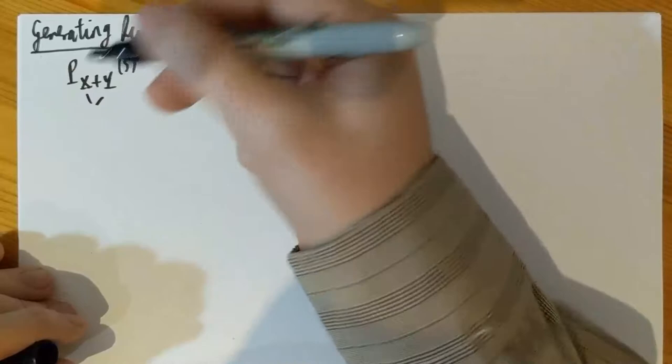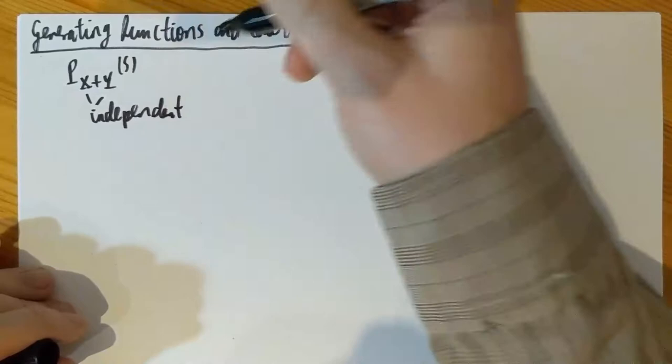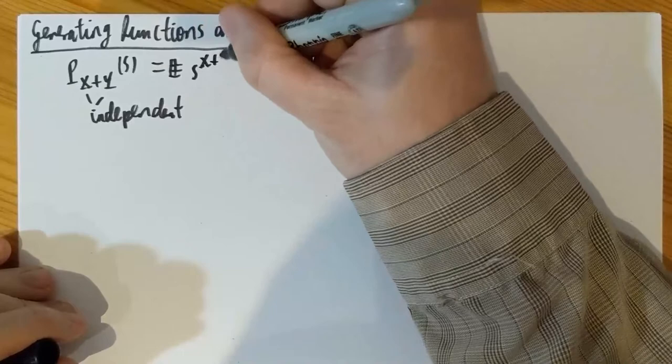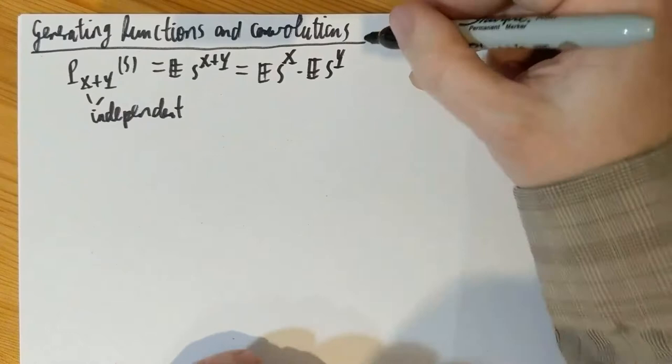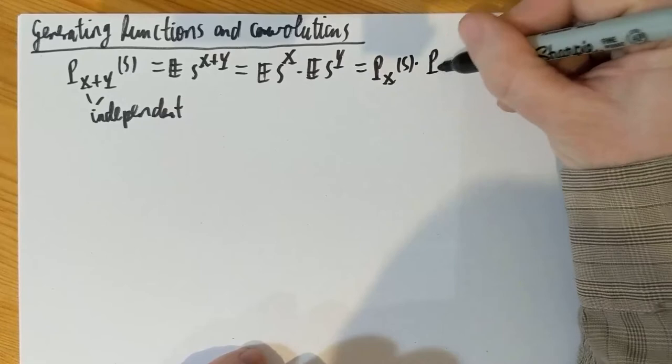So if I have X and Y, non-negative integer variables that are independent, then the generating function of X+Y is the expected value of s to the X+Y. In the same way as the moment generating function, due to independence, I have a factorization: expectation of s to the X times expectation of s to the Y, which is p_X times p_Y evaluated at s. So generating functions also factorize under convolutions.